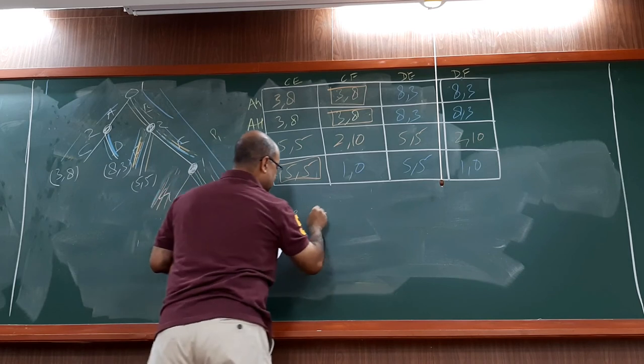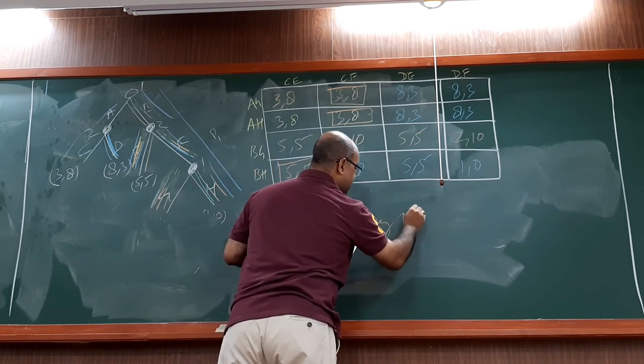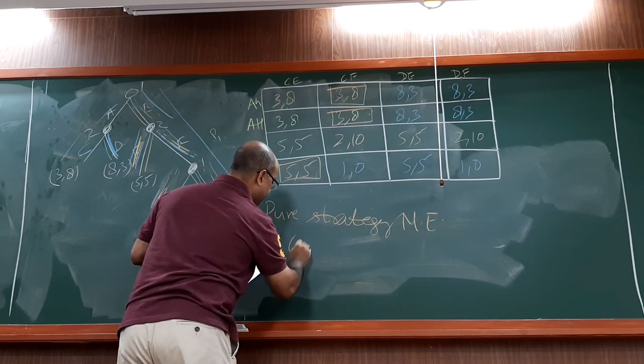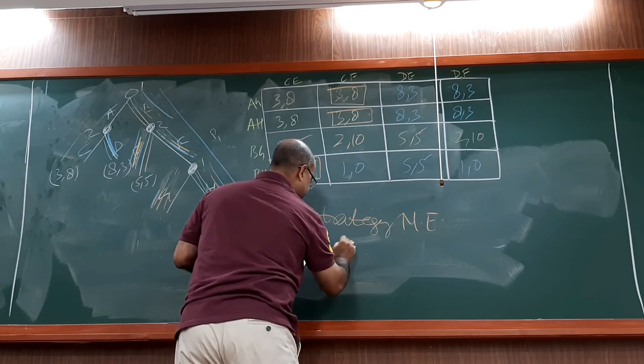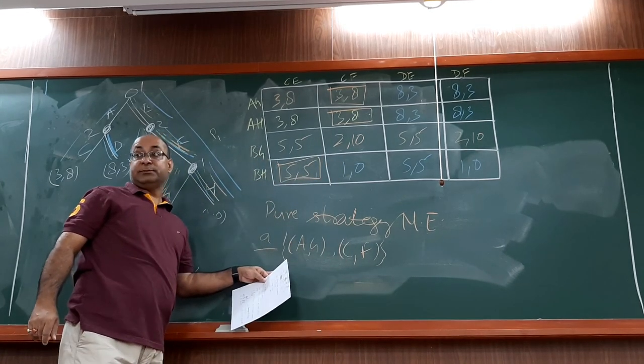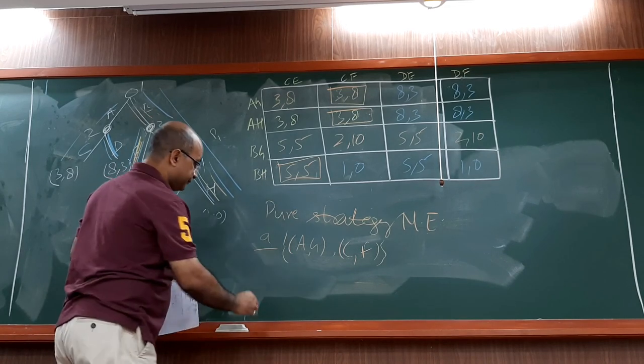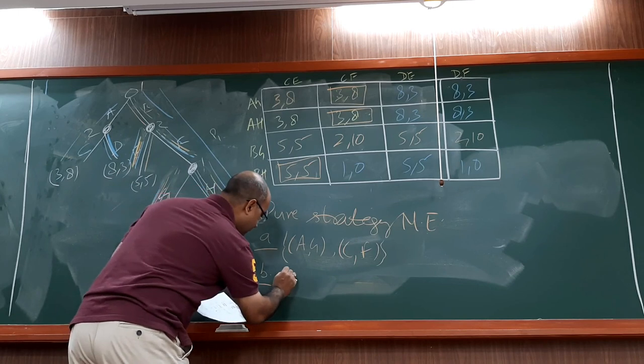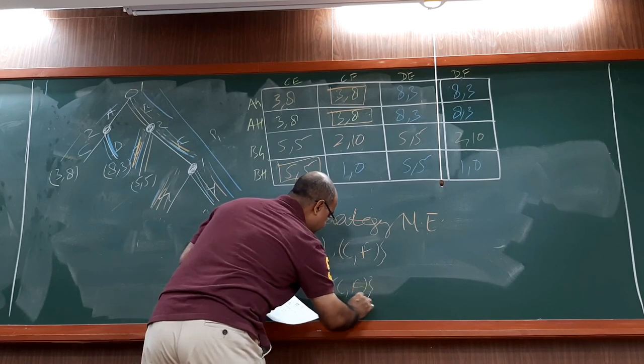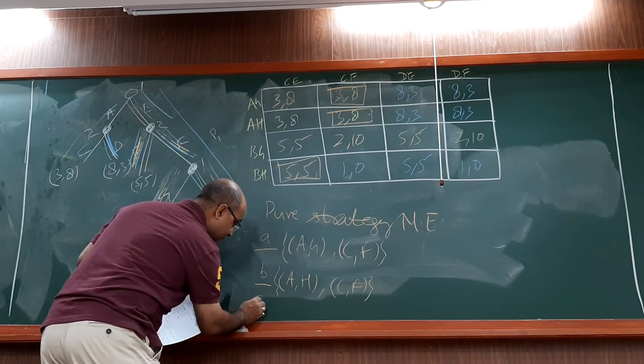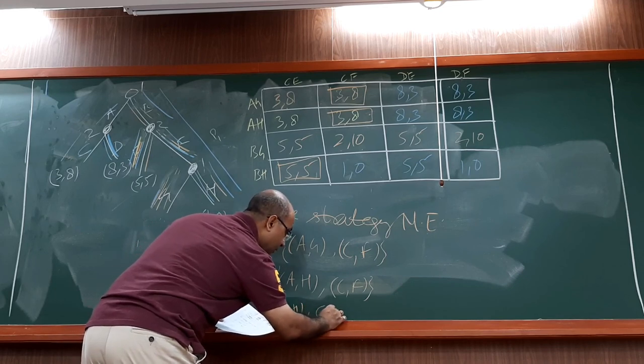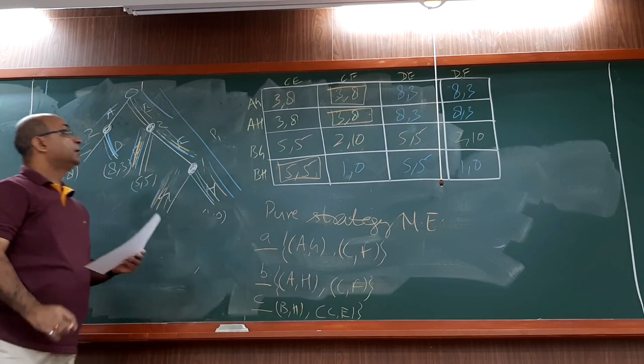How many Nash equilibria are we getting? Three. So let me highlight these Nash equilibria. I think one was this, another one was below this, and then this. So here are the Nash equilibria: A, G, C, F; A, H, C, F; and the last one is B, H, C, E. I am writing in terms of actions, not payoffs. Fine. Thank you.